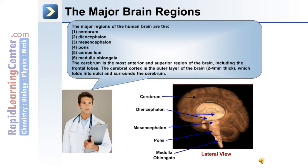The cerebrum is the most anterior and superior region of the brain, including the frontal lobes. The cerebral cortex is the outer layer of the brain, approximately two to four millimeters thick. It folds into sulci and surrounds the cerebrum.